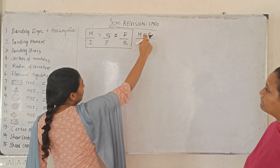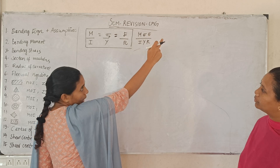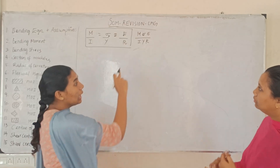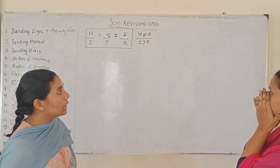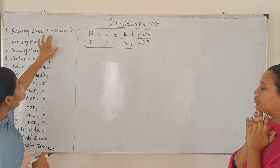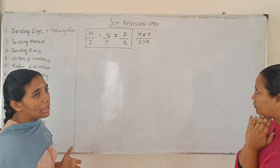M, sigma, y, and y divided by R — these are the terms in the bending equation.